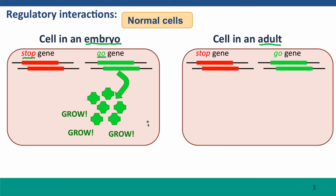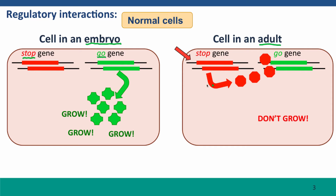However, the same gene in an adult behaves differently. In adult cells, the stop gene is active, and the stop gene produces a protein product that acts as a transcription factor regulating the go gene. In particular, it turns the go gene off, so the go gene is not transcribed in adult cells. So indirectly, the stop gene tells adult cells not to grow.